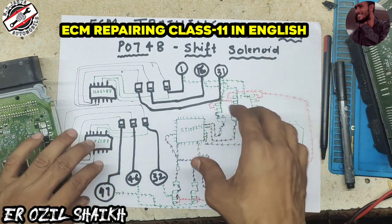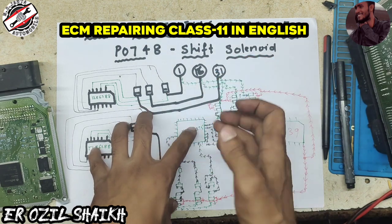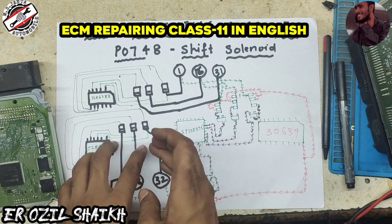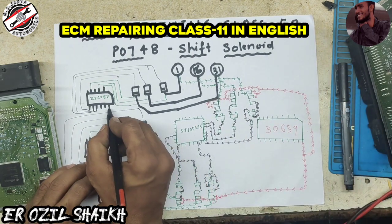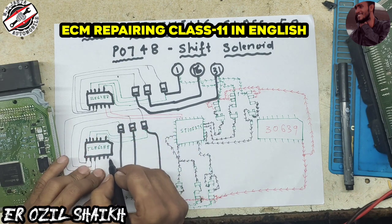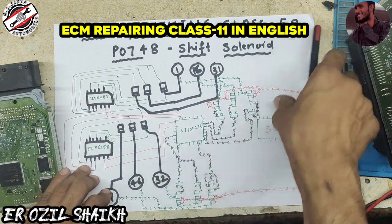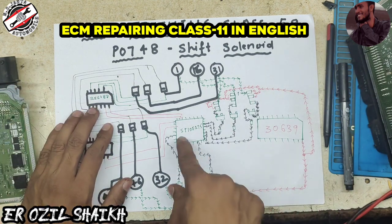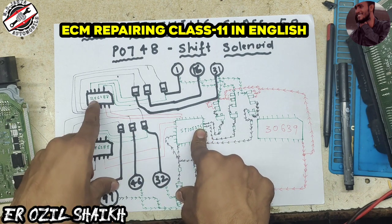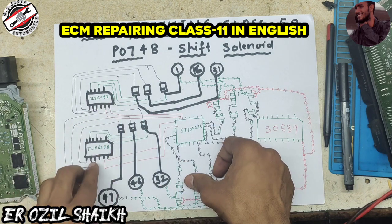These ICs handle shifting from first gear to second gear, third gear, fourth gear, reverse gear — all through TLE6288. This IC is very sensitive; if there is any problem, or any problem in the feedback section, it will not work. The processor ST10F275 commands the TLE6288 IC. When this processor gets all the necessary information from the engine processor, it commands this IC.